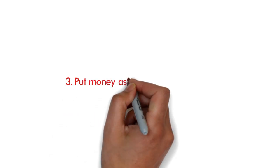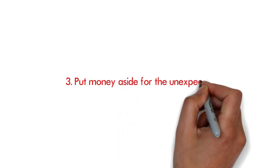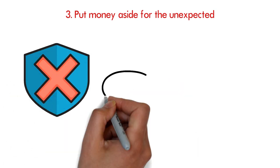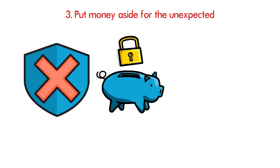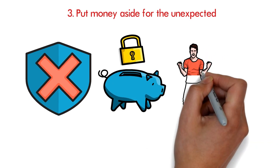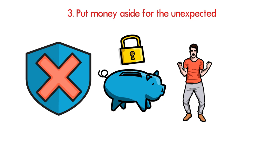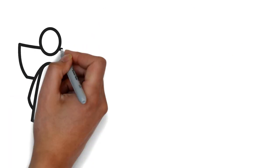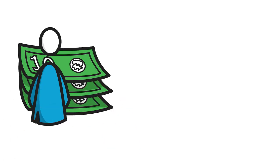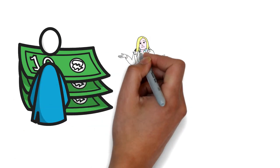3. Put money aside for the unexpected. Warren Buffett keeps billions of dollars on hand in case of emergency. Among Warren Buffett's money advice is to keep an emergency fund. If an outstanding investment opportunity arises, he has the funds to take advantage of it. Having extra cash on hand means that if the stock market falls, we'll be able to buy good stocks at a discount. Then there are the daily financial surprises.